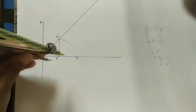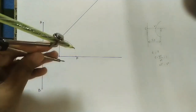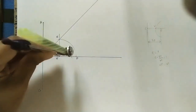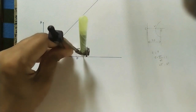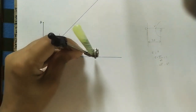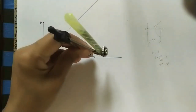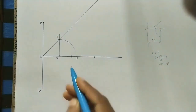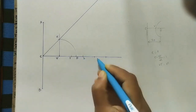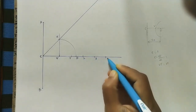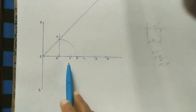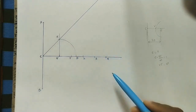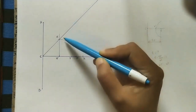Take some radius using the compass and mark the first point. Using this as center, mark the second point; this as center, mark the third point; this as center, mark the fourth point. Give numbering: 1, 2, 3, 4. After getting these points, draw vertical lines through all of them. These vertical lines should touch the inclined line.